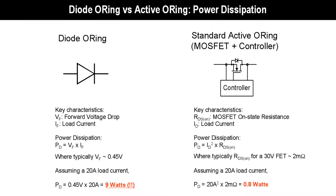As system current levels increase, the diode's power dissipation can become a significant portion of the overall system inefficiencies and can become a thermal challenge as well. A method of regaining system efficiencies and easing thermal management is to replace the oring diode with an active oring solution.